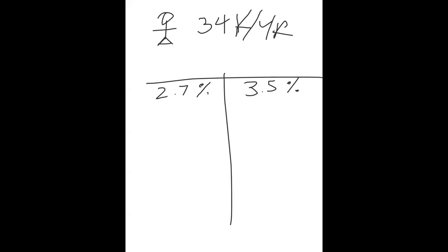Sally's income has not changed. In fact, for most Americans, income has declined. We're taking averages — the median versus the mean — and most Americans' income has not increased; it has declined. So just by adjusting interest rates, the smaller the interest rate, the more house Sally can afford.